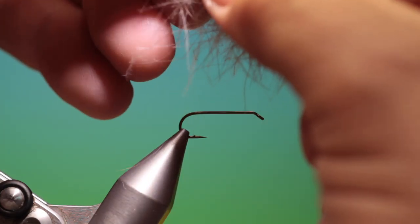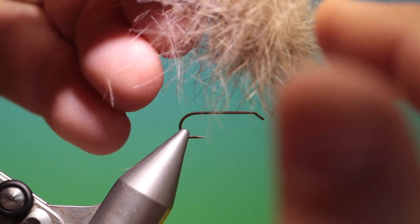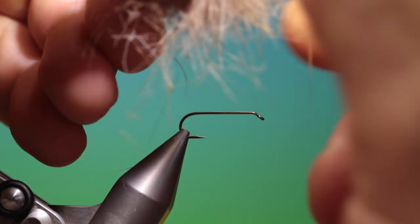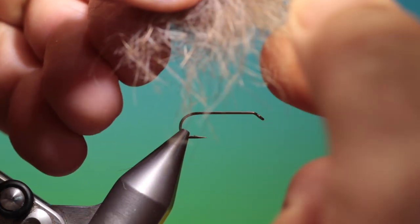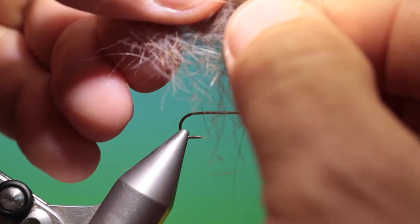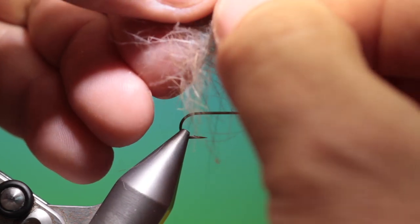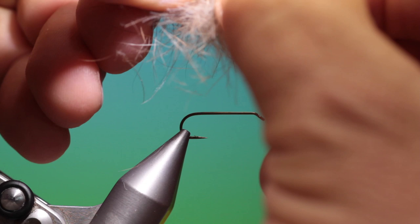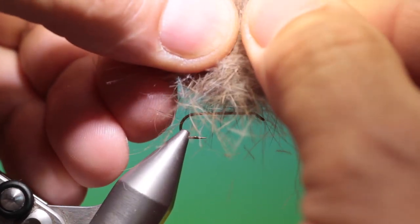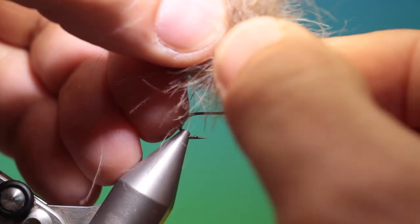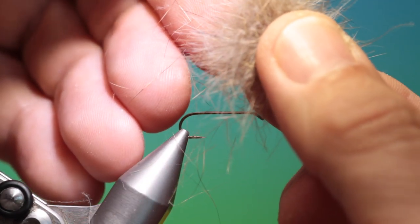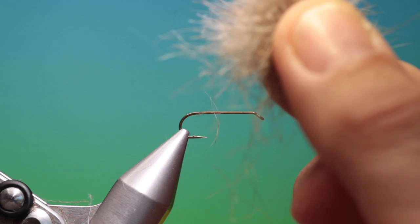So once you've done, and I like to use the natural colours here of CDC, once you've done that and you've made a mix about 50-50, you can start pulling it from each other to mix it like this. And give it a good mix so you get that very nice spiky fluffy dubbing.